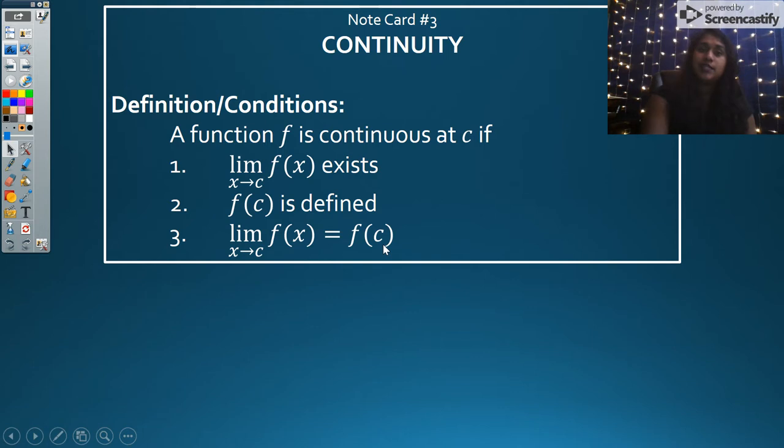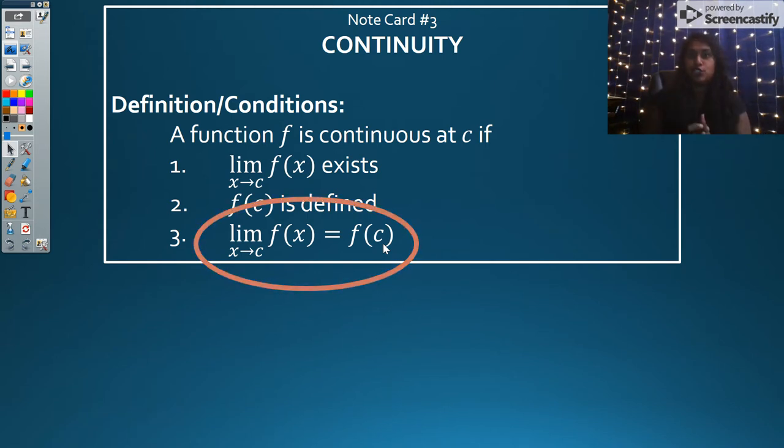So if the limit exists, if my function value exists, and those are the exact same number, then continuity exists. And again, this is the part I need you to be paying attention to. That is our literal formal definition of continuity. When you write disclaimer statements, when you say the function is continuous, this is your because statement. If you write that notation correctly, that's your statement right there. You're good to go.